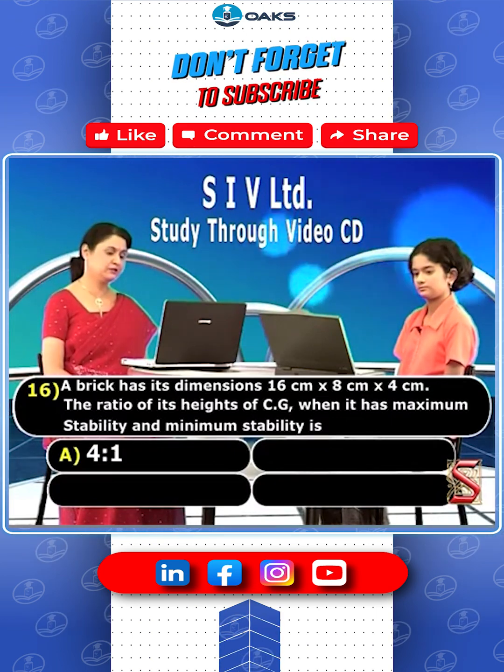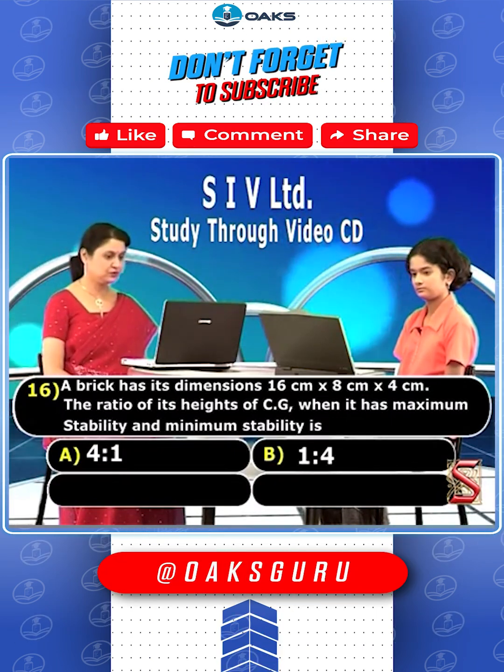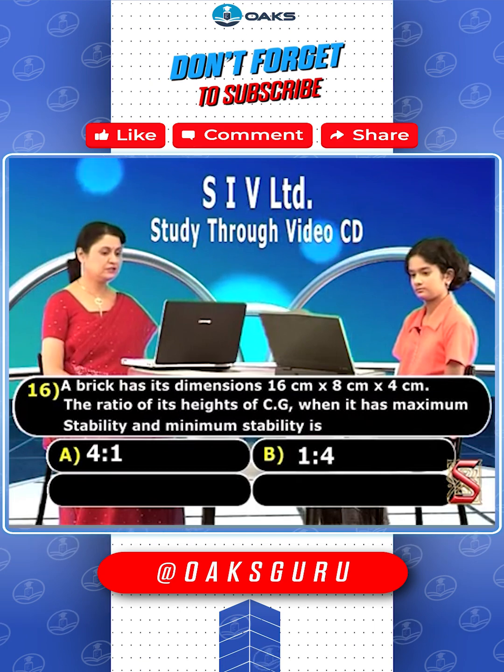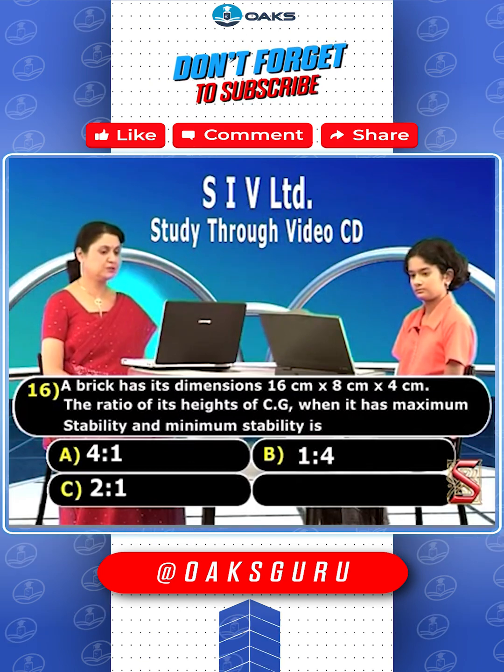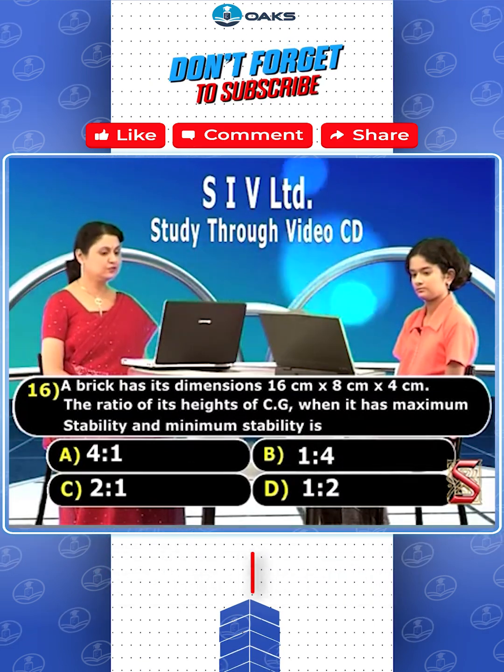The options are: A. 4 is to 1, B. 1 is to 4, C. 2 is to 1, and D. 1 is to 2.